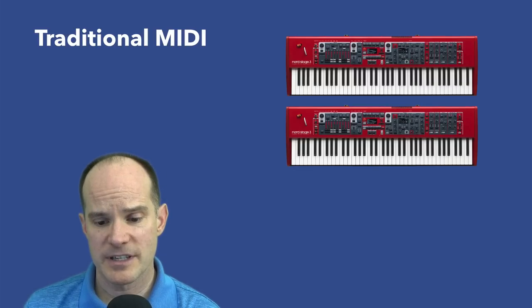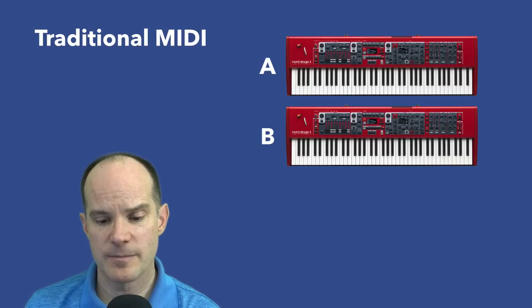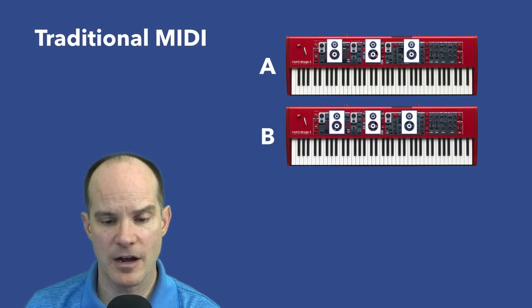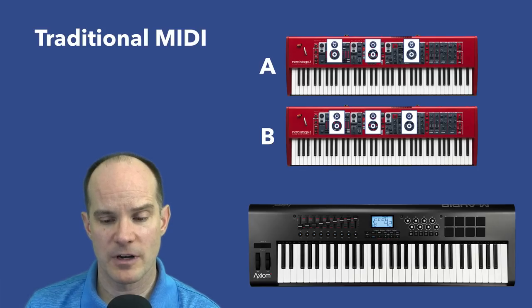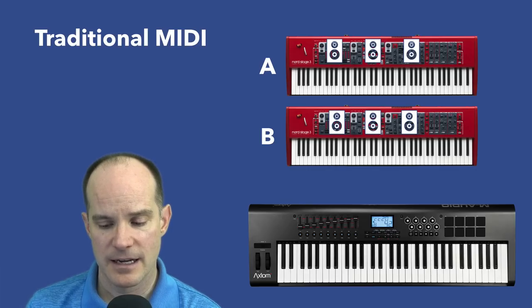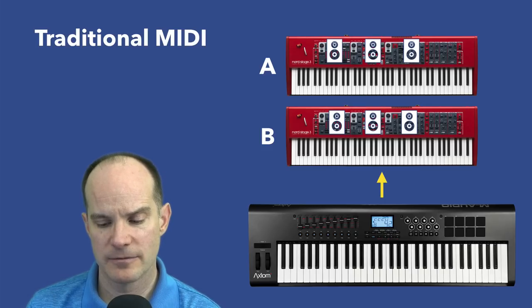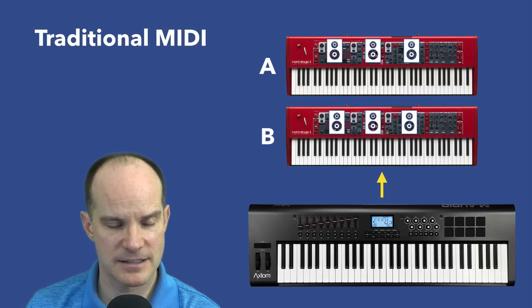Before we look at the details, let's take a step back and look at what traditional MIDI is in terms of having an external keyboard connecting to your Stage 3. In a traditional MIDI setup — not the Dual KB setup — I'll take a couple of Stage 3 panels here and represent them as Panel A and B, with all sound engines on for each panel: organ, piano, and synth. I'll be using the Axiom 61 key external controller keyboard, going MIDI out via a traditional MIDI cable to the MIDI in on the Nord Stage 3.